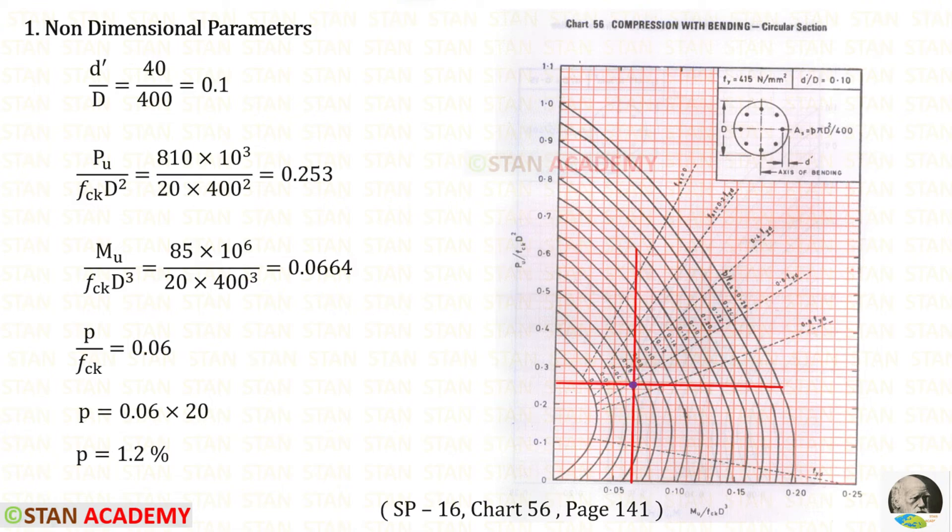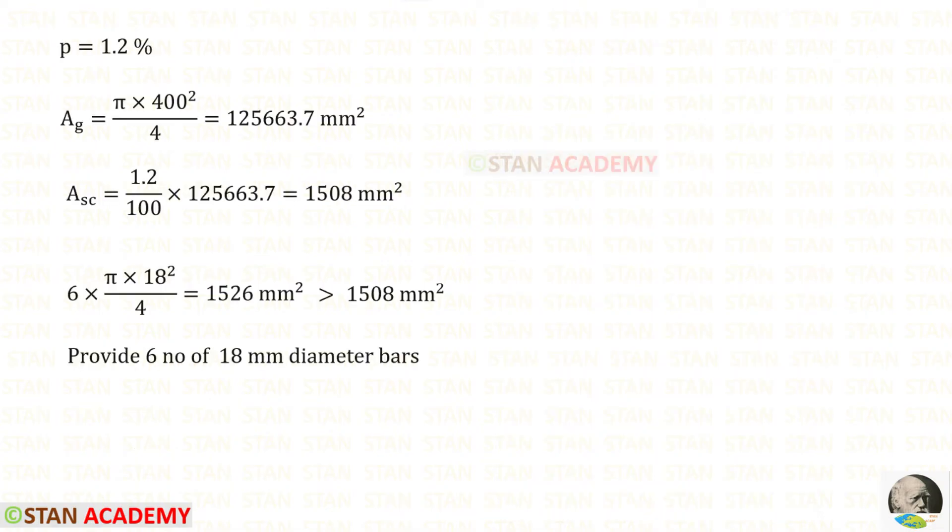This point is approximately in the curve of 0.06. So p upon f_ck is 0.06. We know the value of f_ck 20, so for the percentage of steel we will get 1.2%.